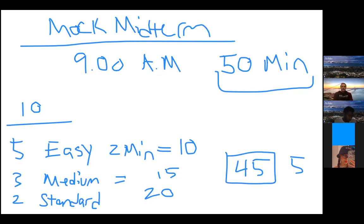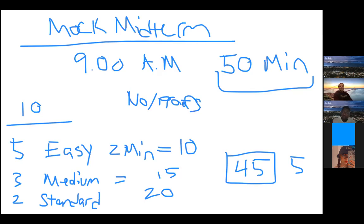The test covers everything we've done, and I'm pulling review problems from different sections today. There will be no delta-epsilon proofs and no proofs of any kind — I didn't assign homework on proofs, so I won't test you on them. Most Berkeley professors are similar: if they didn't explicitly cover it in class, they probably won't test it. There is a curve, and since many students see this material for the first time, the curve tends to be generous.